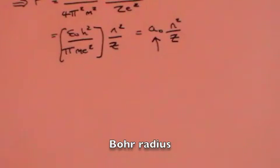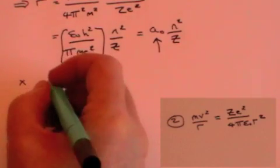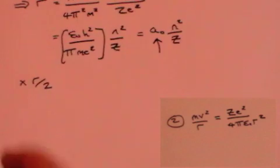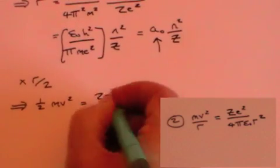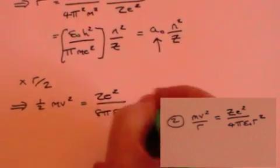Now, from the second equation, we can multiply both sides by r over 2, and we get that a half m v squared equals z e squared divided by 8 pi epsilon naught r.